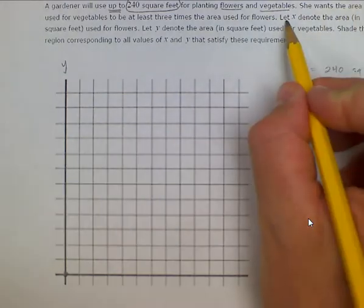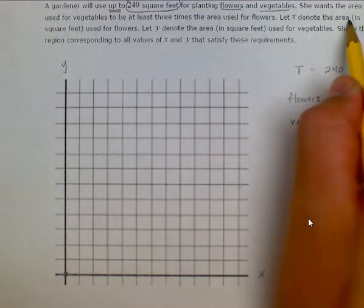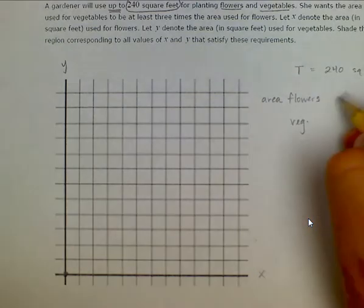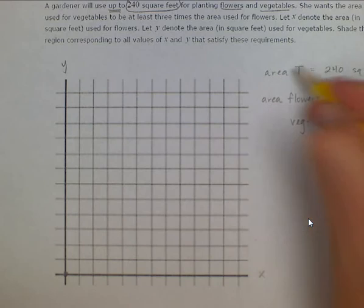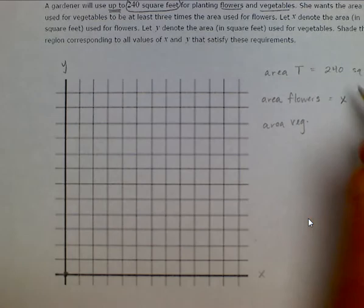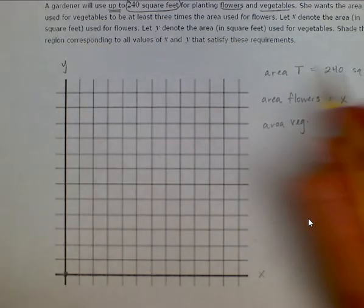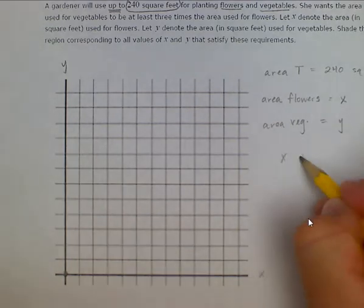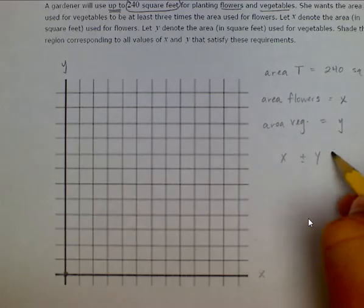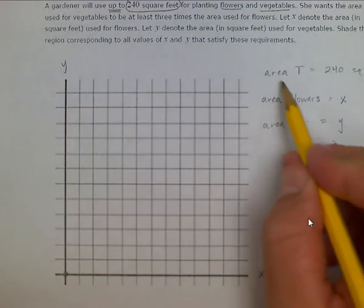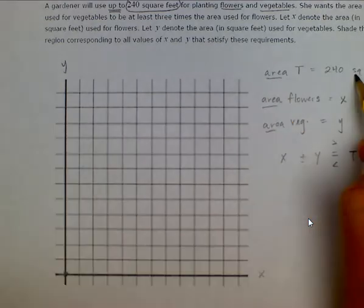Let x denote the area used for flowers, and y denote the area used for vegetables. We have the form where x plus y is going to equal or be greater than or less than some total, where we're working with the same units — all square footage of area.